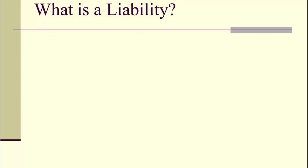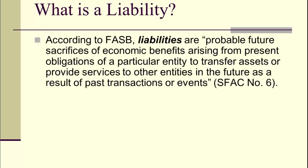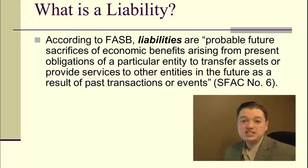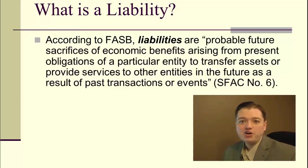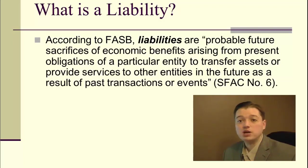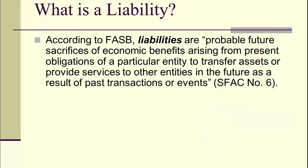What is a liability? Here's FASB's definition: probable future sacrifices of economic benefits arising from present obligations of a particular entity to transfer assets or provide services to other entities in the future as a result of past transactions or events. Wow, that's really a mouthful. Perhaps an easier way to think about this is it's just what we owe to other companies, individuals, or entities because of what we have done and are doing. Really, it's an obligation to pay out some of the firm's assets. With our simplified definition, it can seem really easy to classify liabilities.